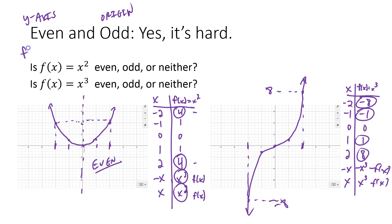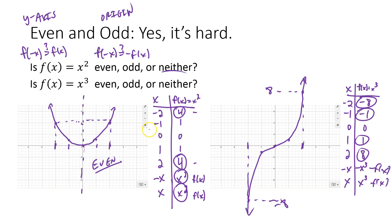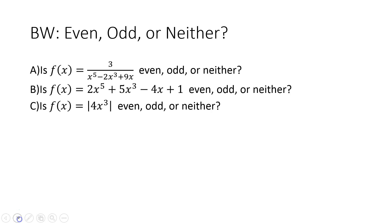To test if we have an even function, we plug negative x into the function and ask: do we get the function back out? For odd, we plug in negative x and check: do we get the opposite of the original function, negative f(x)? That's why you saw me writing out negative f(x) and f(x) — to see which one we get when we plug in negative x. If we get neither of them, then we have a neither. In this case, x³ is odd and x² is even, because of the symmetry.